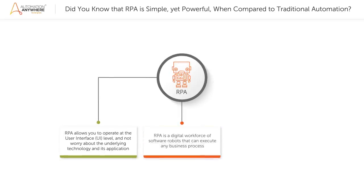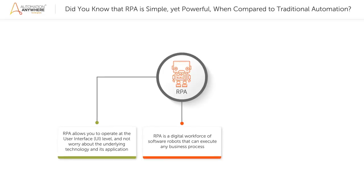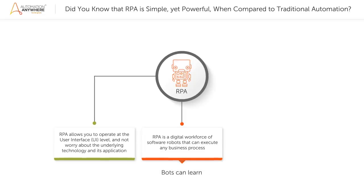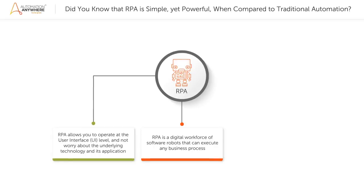RPA is simple and powerful and enables you with tools to create your own software robots to automate any business process. Your bots are configurable software set up to perform the tasks you assign and control. Think of them as your digital workforce. Show your bots what to do, then let them do the work. They can interact with any system or application the same way you do. Bots can learn. They can also be cloned.